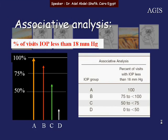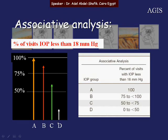For the associative analysis, patients were divided into four groups during the follow-up period. In Group A, IOP was below 18 in 100% of visits. In Group B, IOP was below 18 in 75–100% of visits. In Group C, IOP was below 18 in 50–75% of visits. In Group D, IOP was below 18 in only 0–50% of visits.